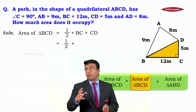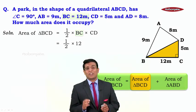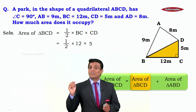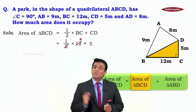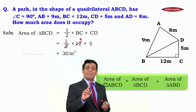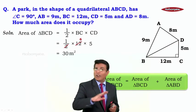Now we just need to substitute the value. What is the value of BC? We know it is 12. What is the value of CD? We know it is 5. So it is 2 ones and 2 sixes. So we get 6 into 5, it is nothing but 30 meter square. So now what has happened? We got area of triangle BCD, it's over.